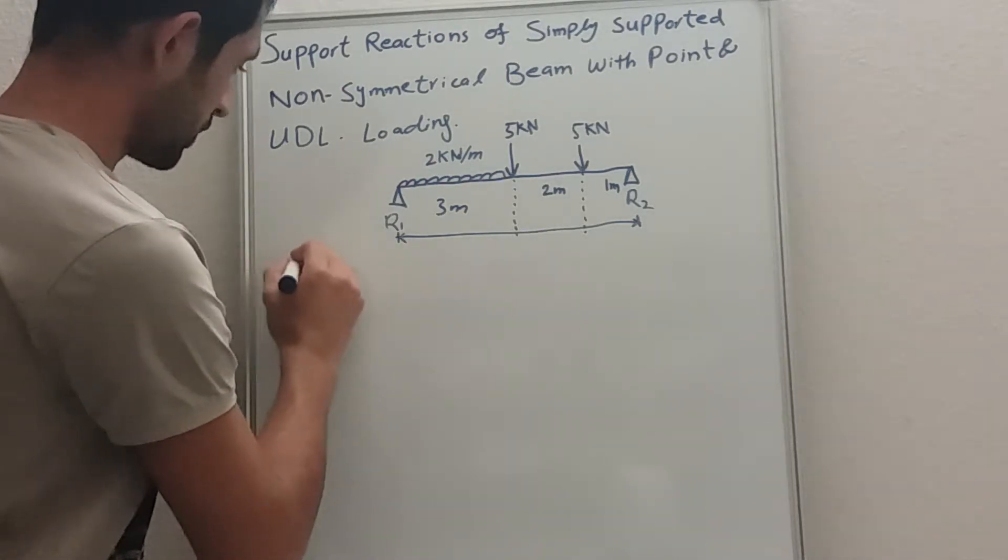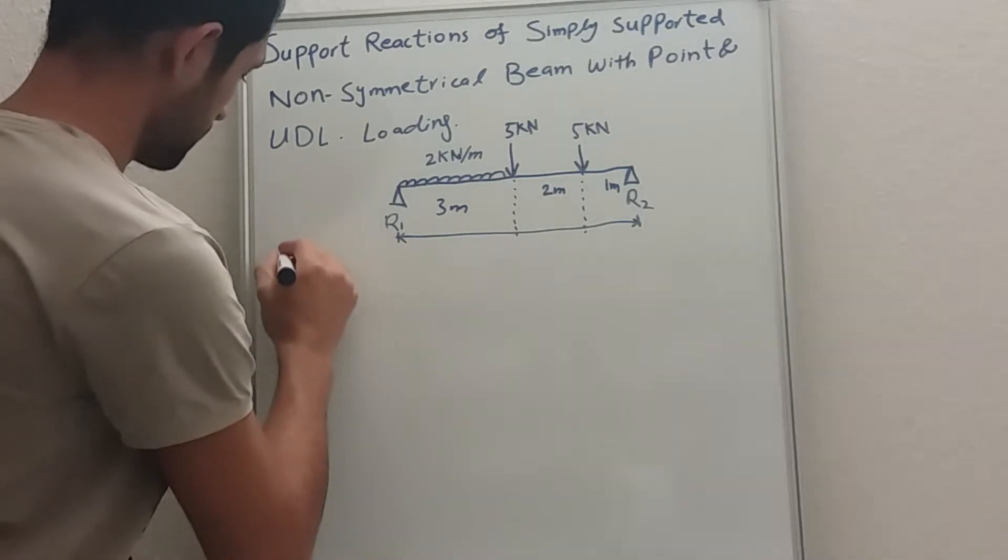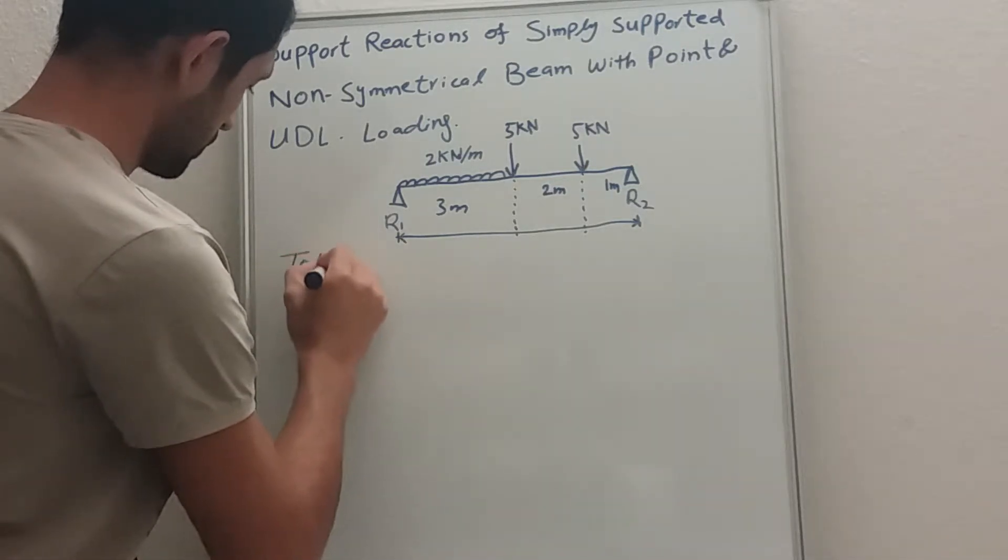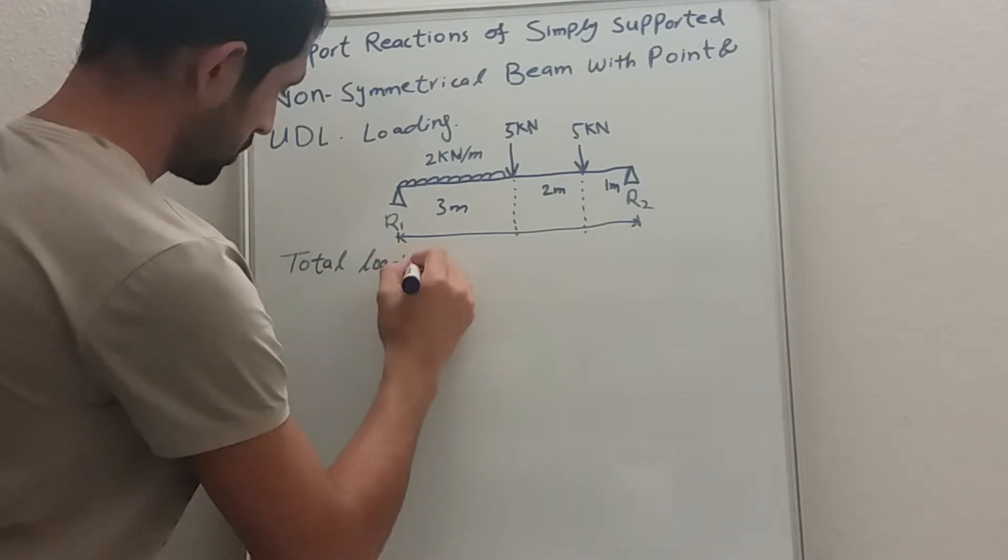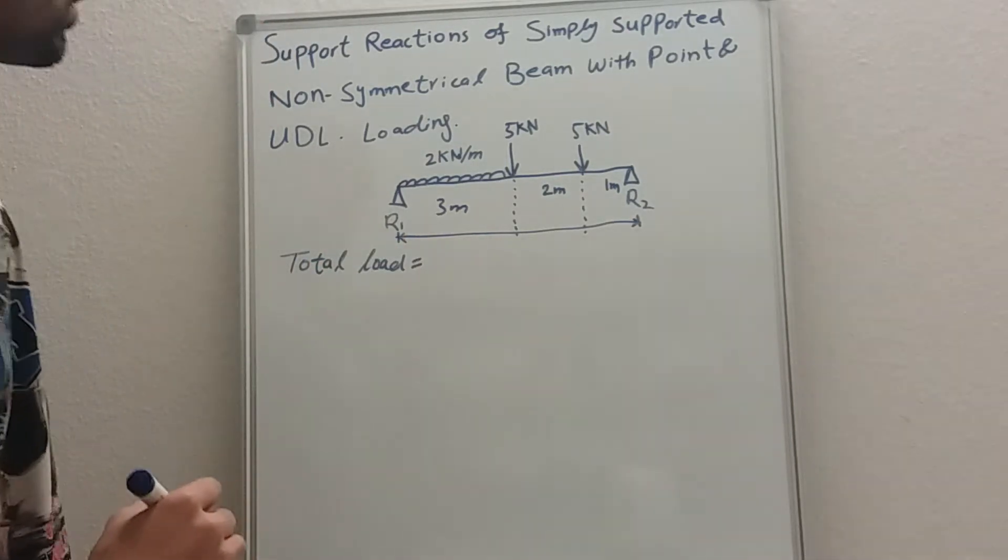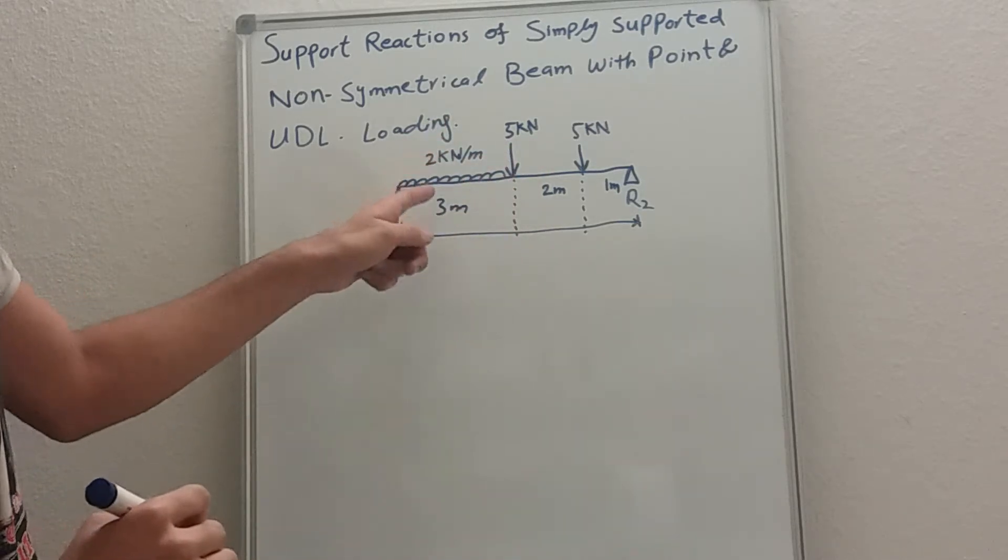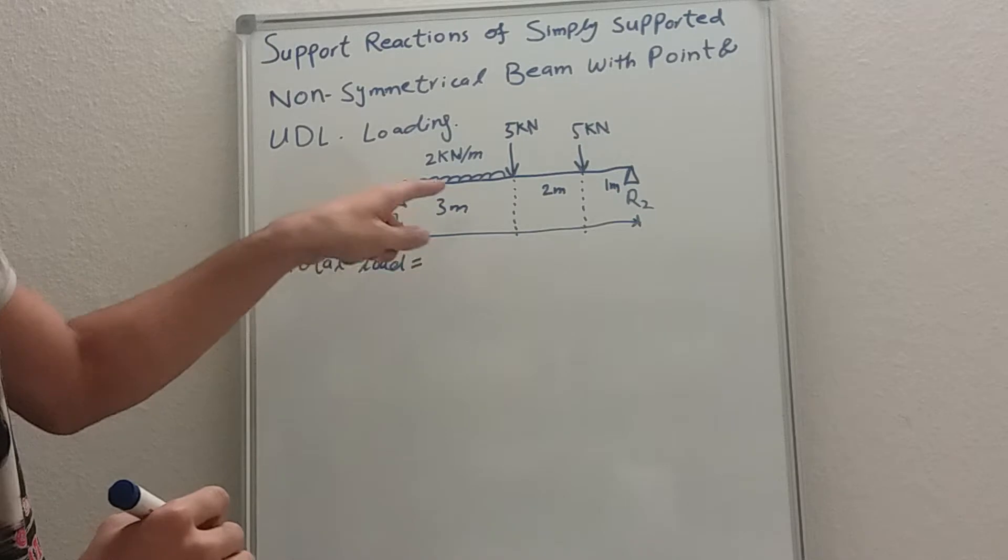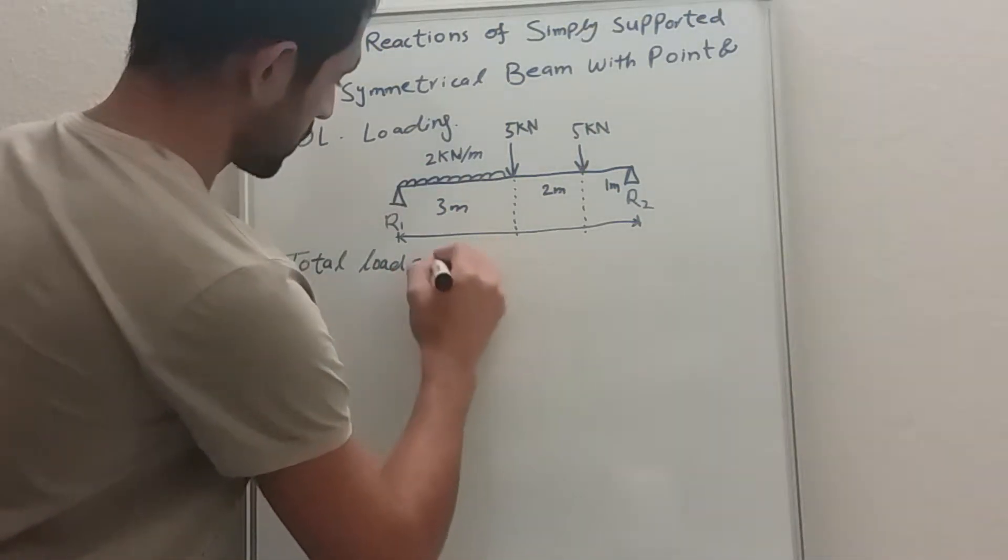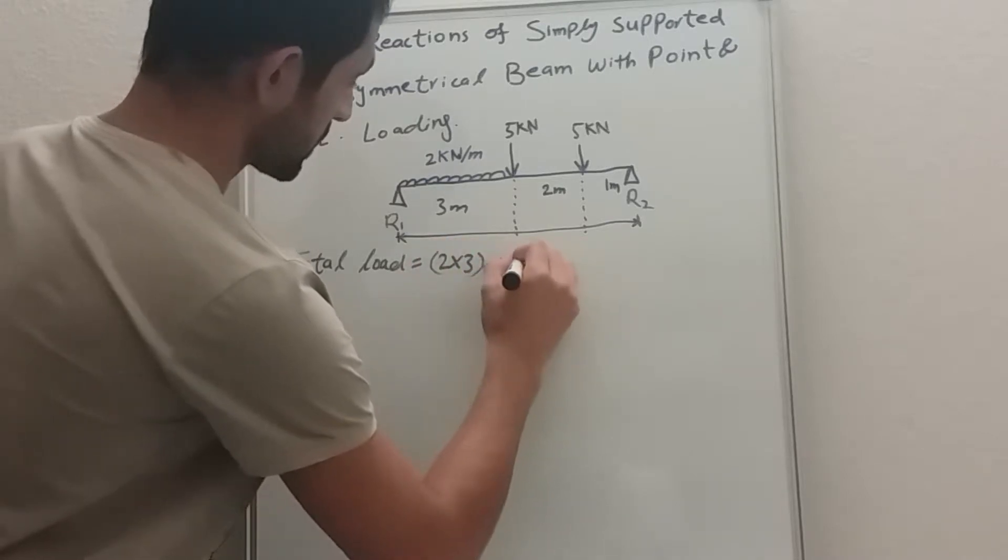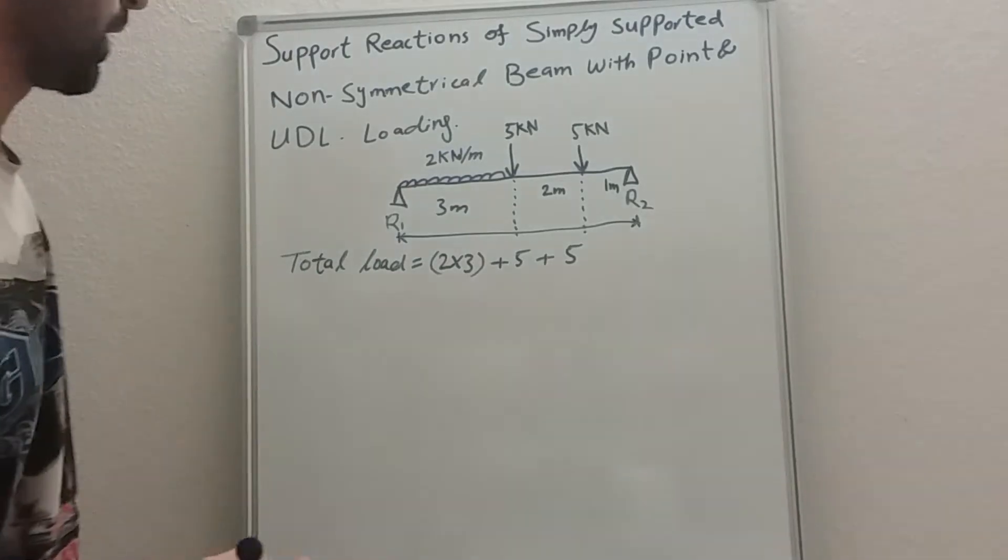As you can see written on the top, first of all you need to calculate total load. Total load is equal to two kilonewtons per meter UDL over the length of three meters, so two times three, plus five plus another five for the two point loads we have.